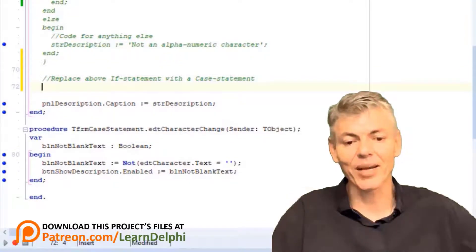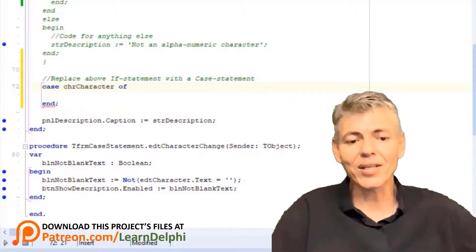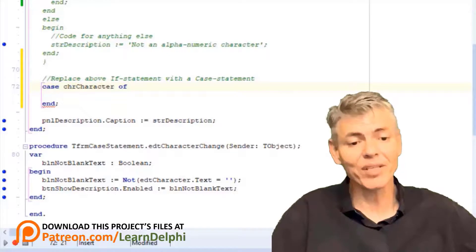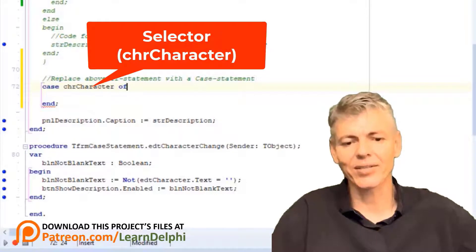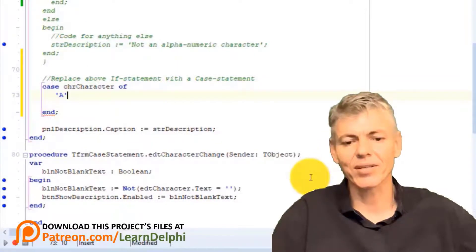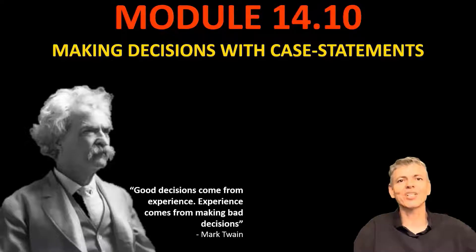Go on the next line and type case chrCharacter of. Delphi added an end statement. Notice a case statement has an end without an opening begin. This case must check what is in chrCharacter. Last time we assigned the text in the edit to chrCharacter. In the previous videos I also showed that edtCharacter's max length property is set to 1, so only one character can be typed in the edit. That can be a letter in the alphabet, a number, or a special character. Our new case statement must check what character is stored in chrCharacter. We call this the selector of the case. Make a new line and type this.